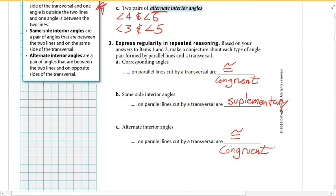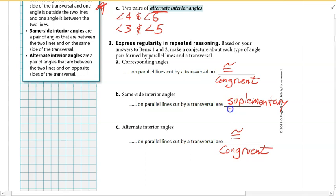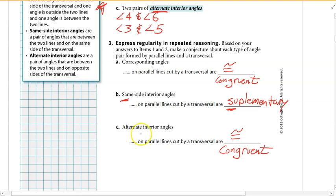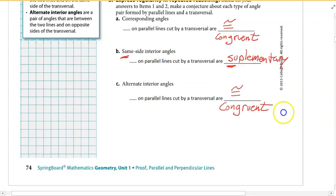Just like at one intersection you can have a linear pair that's supplementary or vertical angles that are congruent, whenever you have parallel lines cut by a transversal, some angle pairs are congruent and some are supplementary. A real easy way to remember: same side angles are supplementary, the rest are congruent. The ones that are supplementary start with an S — same side interior angles are supplementary.